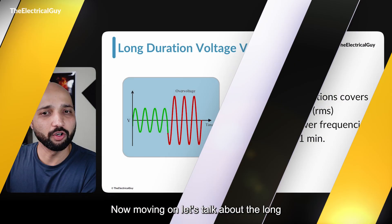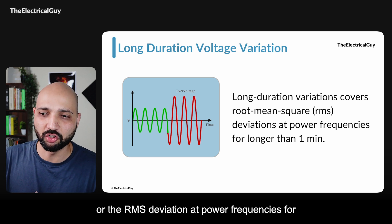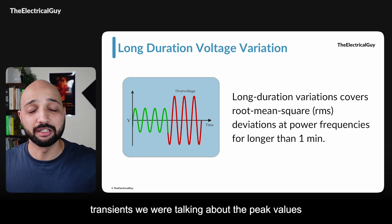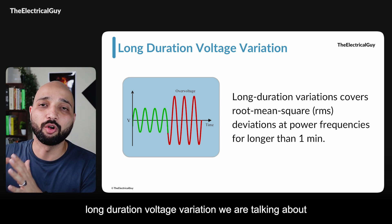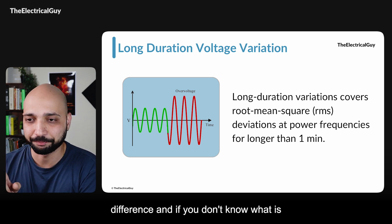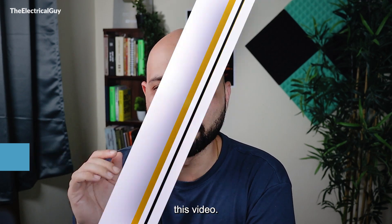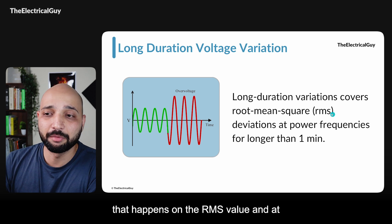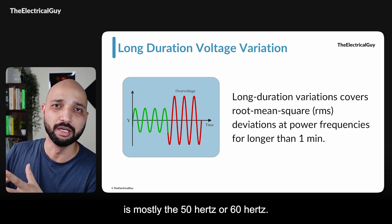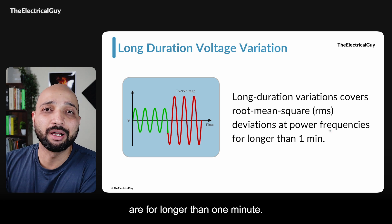Moving on, let's talk about long duration voltage variations. Long duration variations cover RMS deviations at power frequencies for longer than one minute. When we talked about transients we were talking about peak values, but for long duration voltage variation we are talking about RMS values — this difference is very important. Power frequency means the frequency at which we generate, transmit, and distribute electricity, which is mostly 50 Hz or 60 Hz. So we are covering deviations happening at power frequency that last longer than one minute.